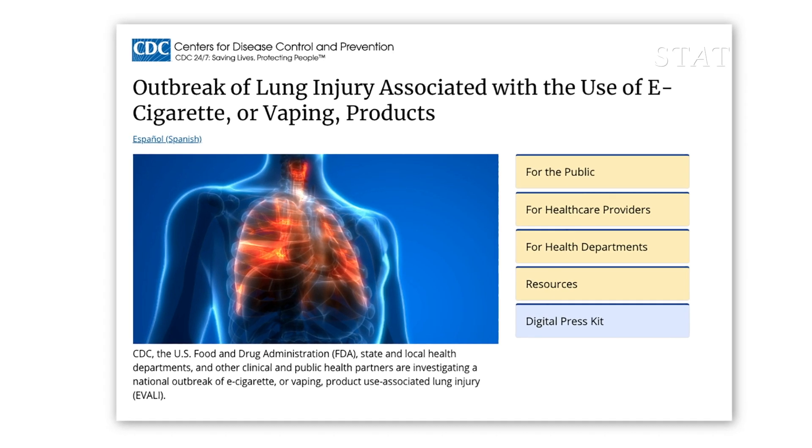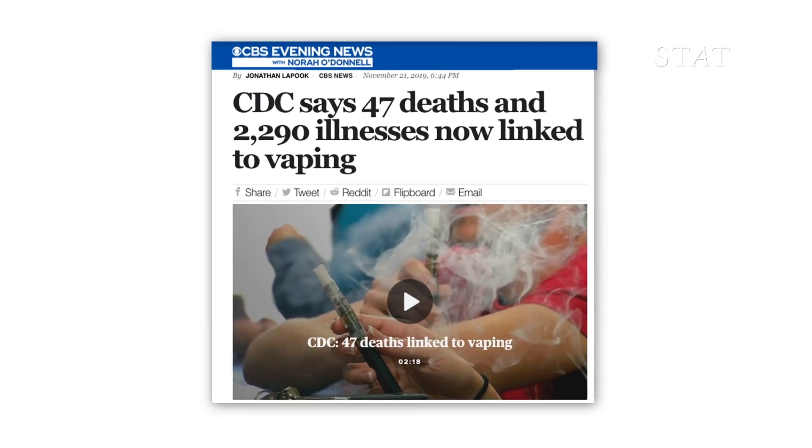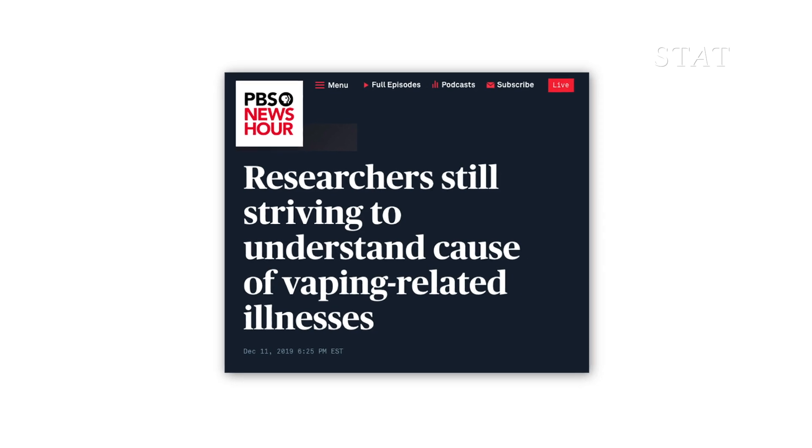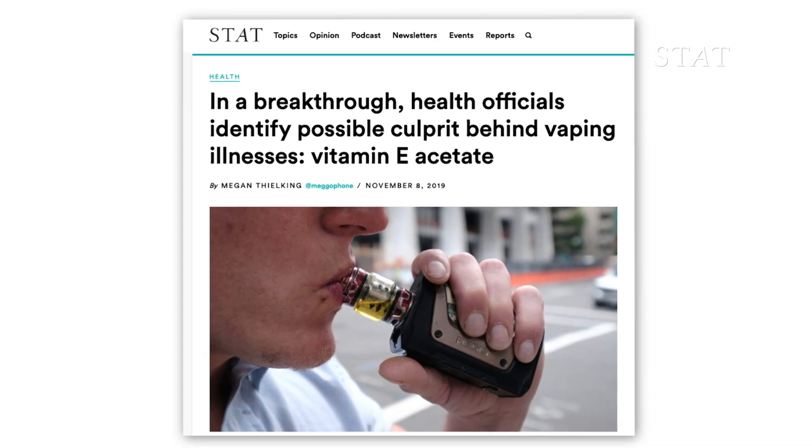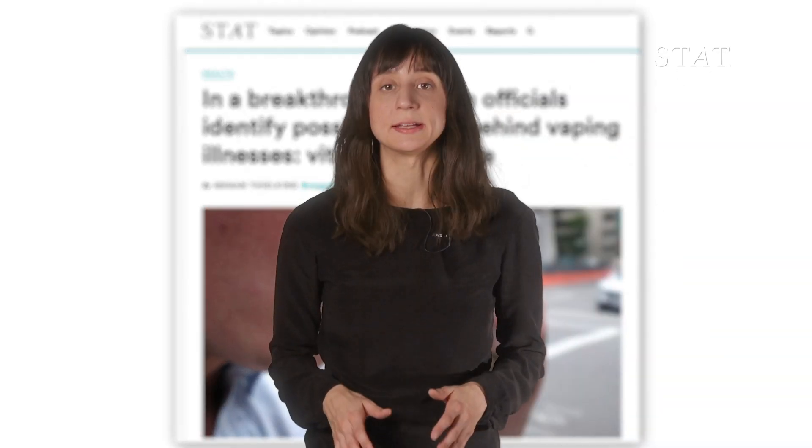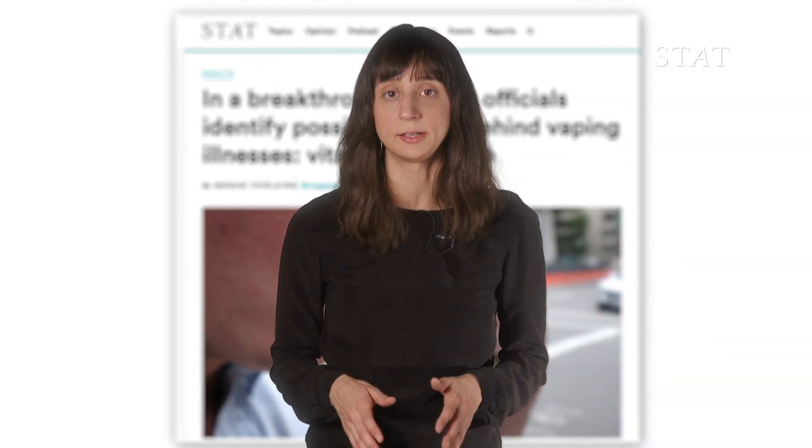Health officials have spent months investigating an outbreak of serious lung illnesses tied to e-cigarette use and vaping. They've zeroed in on a substance called vitamin E acetate as a potential culprit. But what is vitamin E acetate and how does your body process it?